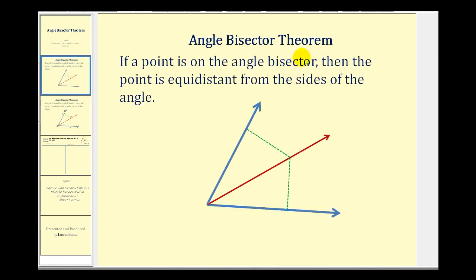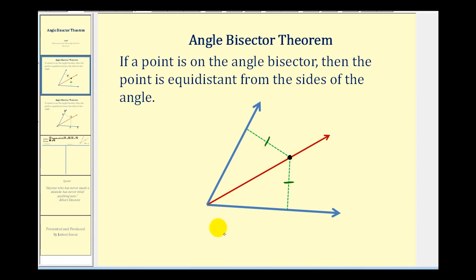The Angle Bisector Theorem states that if a point is on the angle bisector, then the point is equidistant from the sides of the angle. So if the red ray is the angle bisector and we consider a point on it, this theorem tells us that the point would be equidistant from the two sides of the angle — the two blue rays — meaning this green segment would be congruent to this green segment.